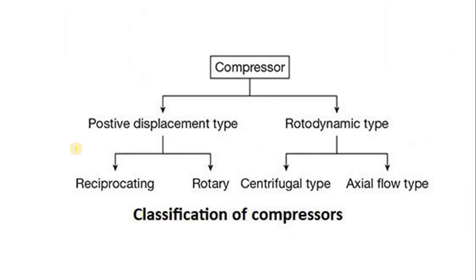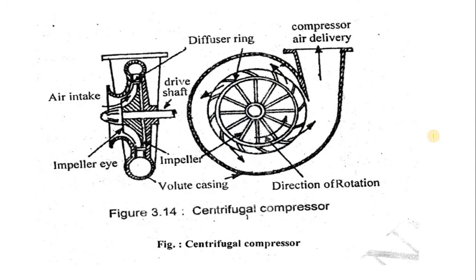Now we will discuss the rotodynamic compressor. Rotodynamic compressors are two types: the first is the centrifugal compressor and the second is the axial flow compressor. This is a very simple type of centrifugal compressor. It consists of an impeller along with blades. Similarly, the diffuser is there — placed in between the casing and impeller. This is the casing, and this is the portion through which air enters inside, which you can call the eye of the impeller, and this is the delivery line.